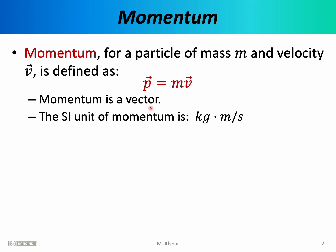Notice that the definition of momentum is a relatively simple one, although applying momentum can be quite complicated and requires a fair bit of practice. We'll want to measure momentum, and therefore we'll need units of measurement. The SI unit of momentum is the kilogram meter per second. That should make sense because mass is measured in kilograms and velocity is measured in meters per second, so the unit for momentum should be kilogram meters per second.